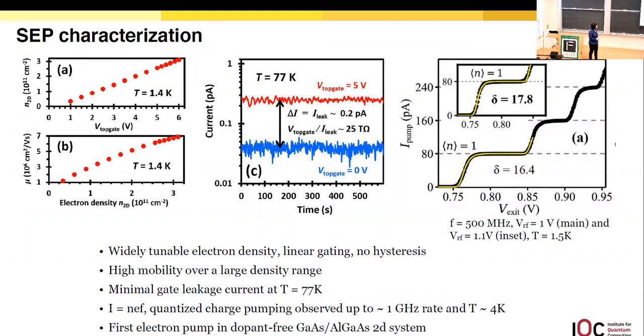What happens in a single electron pump is the current is defined as n times e times f. n is the number of electrons ejected per pulse, e is the electron charge, and f is the driving frequency. When you look at the figure, the n equals one here means there is only one electron ejected per pulse. The second line means there are two electrons ejected in this plateau, then three electrons, for example. We have operated the pump up to a gigahertz range at four kelvin, which is actually a high temperature for a pump to work. Also, this is the first electron pump in GaAs/AlGaAs material systems.